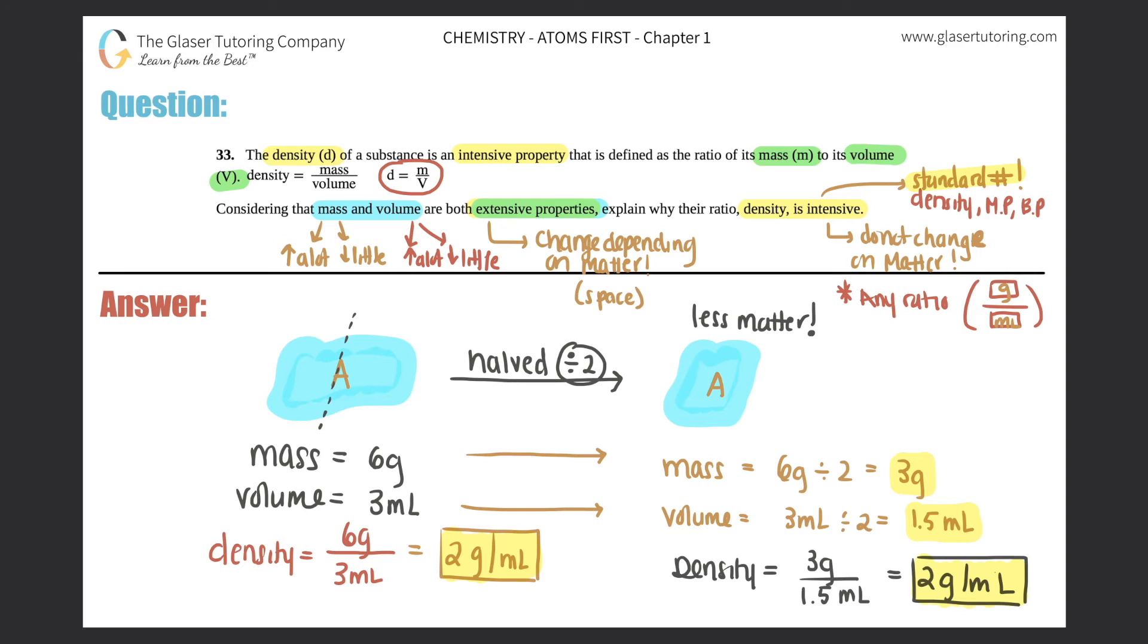But just know that any ratio of extensive properties - I'm just going to put extensive property - are intensive. So if you take two extensive properties and you divide them, you will get an intensive property, a standard number.